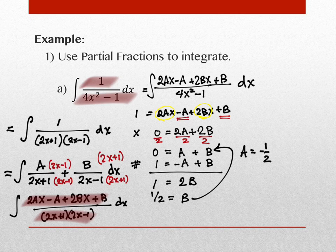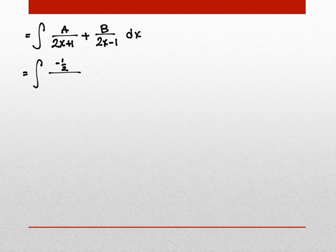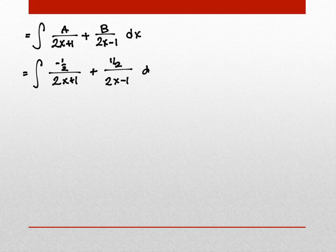I can now rewrite what we originally separated as A over (2x + 1) plus B over (2x − 1). A is −1/2 and B is 1/2. That's the college algebra component. Now I can use properties of integrals: rewrite with the −1/2 in front of the integral of 1/(2x + 1), plus 1/2 in front of the integral of 1/(2x − 1). Now I can use u-substitution.